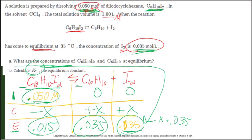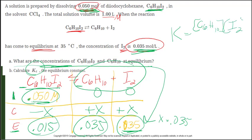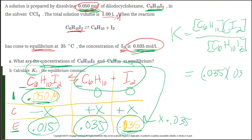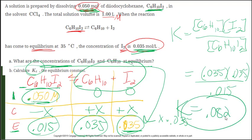Let's find Kc — products over reactants. K equals concentration of C₆H₁₀ times concentration of I₂, all over concentration of C₆H₁₀I₂. So: (0.035 × 0.035) divided by 0.015 gives a K value of 0.082. This value is less than 1, meaning it is very reactant favored. In the last problem, I had a very large K value, so it was very product favored — it wanted to go to the right. I'll see you next time.